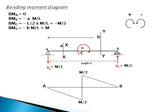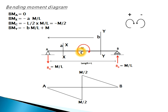At point C (midpoint, L/2), just to the left using the first equation: bending moment = −(L/2)·(M/L) = −M/2. Just to the right of C using the second equation: bending moment = −(L/2)·(M/L) + M = +M/2. So there is a sudden jump of M in the bending moment at point C.